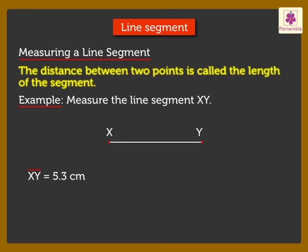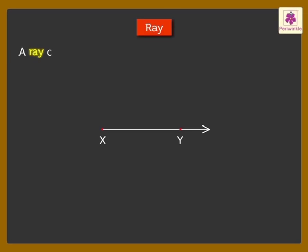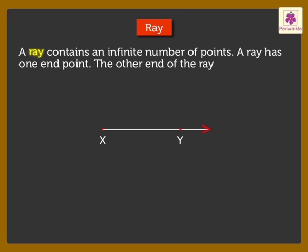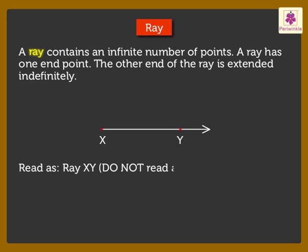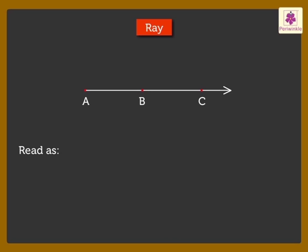Next is Ray. A ray contains an infinite number of points. A ray has one end point. The other end of the ray is extended indefinitely. XY is a ray. It can be read only as Ray XY as we always start from the end point. Do not read it as Ray YX. It is written as shown. This ray can be read as Ray AB, Ray AC.